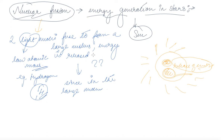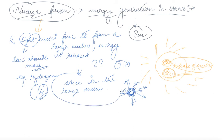Why is energy released? Because in the large nucleus, it is tightly bound — the binding energy is high. We can see this from the binding energy curve: when two nuclei fuse together, the resultant nucleus is tightly bound, and because it is tightly bound there is a release of energy. This is the whole concept of nuclear fusion.